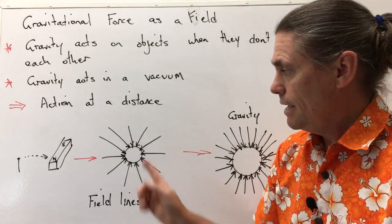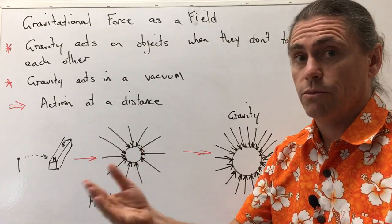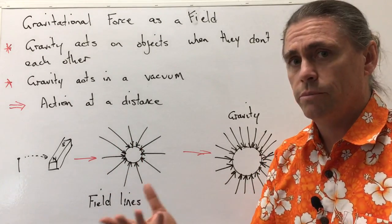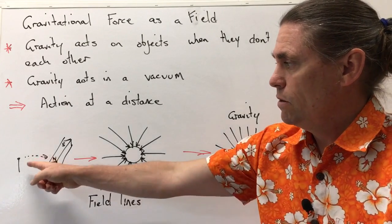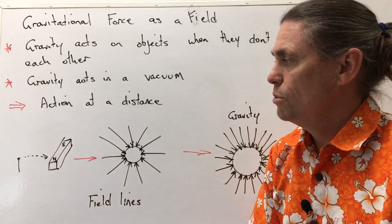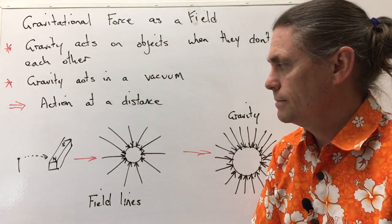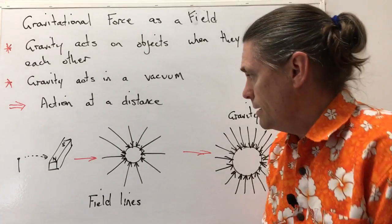And as we travel out further, the field becomes weaker and weaker. And that's what we observe with our magnetic fields. We hold our iron nail very close and it has a very strong pull. The further we move this object out, the less pull that it has.